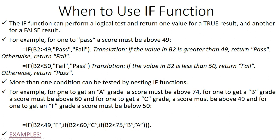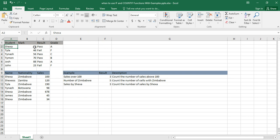Let's check some examples. This formula came from this statement: for one to get an A grade, a score must be above 74. For a B grade, a score must be above 60. For a C grade, a score must be above 49. And for an F grade, a score must be below 50. So we have multiple conditions to check.